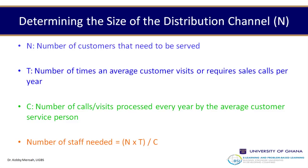To determine the size of the distribution channel, look at: the number of customers that need to be served within a particular time; the number of times an average customer visits or requires sales calls per year; and the number of calls or visits processed every year by the average customer service person. The formula for number of staff needed is: N (number of customers) multiplied by T (number of times an average customer visits or requires service calls per year), divided by C (number of calls processed every year by the average customer service person).